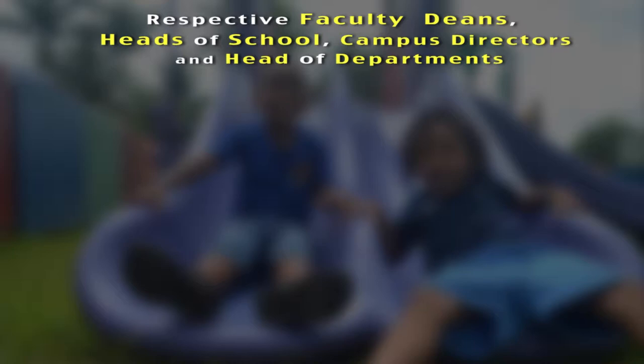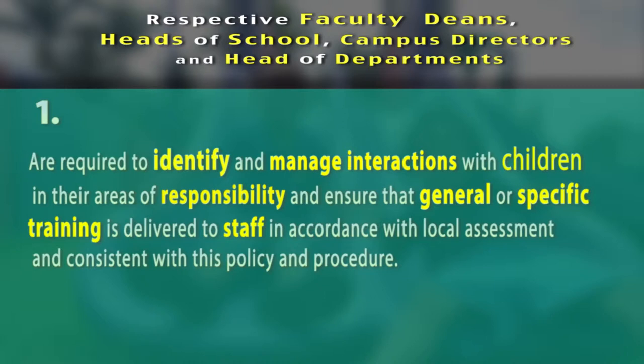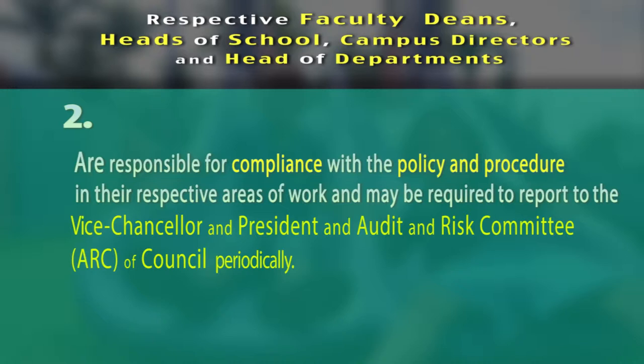Respective faculty deans and heads of school, campus directors, and heads of departments are required to identify and manage interactions with children in their areas of responsibility, and ensure that general or specific training is delivered to staff in accordance with local assessment and consistent with this policy and procedure.